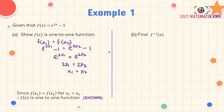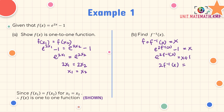For part B, we want to find f inverse. Use f composite f⁻¹ equals to x. Substitute f⁻¹ into the function: e^(2f⁻¹(x)) − 1 = x. So e^(2f⁻¹(x)) = x + 1, then 2f⁻¹(x) = ln(x + 1). Therefore, f⁻¹(x) = (1/2)ln(x + 1).